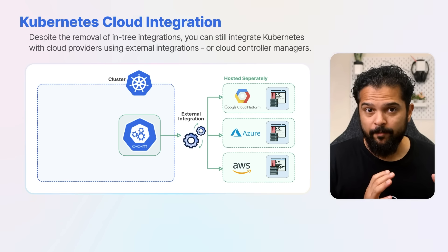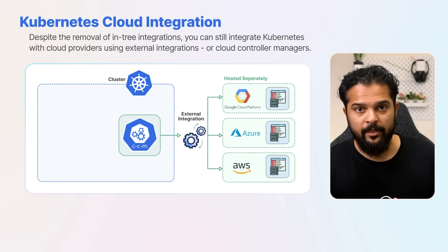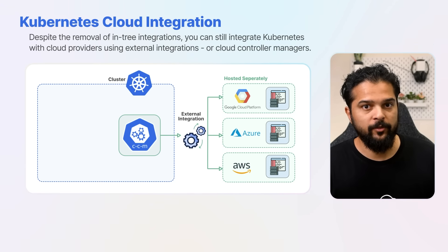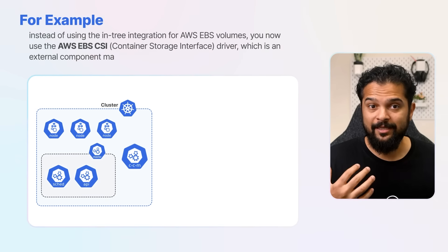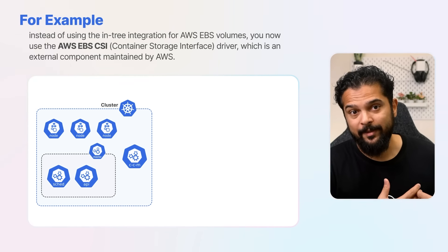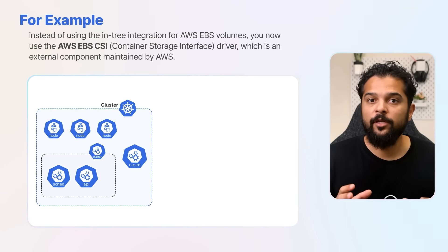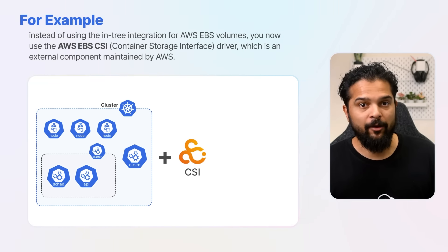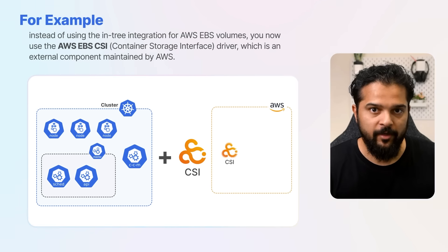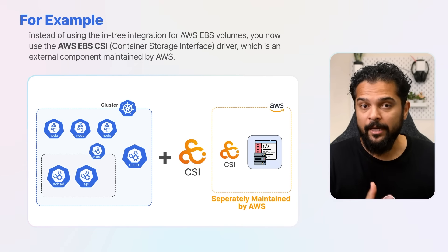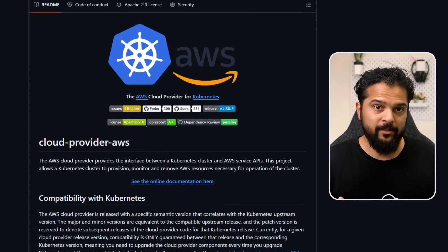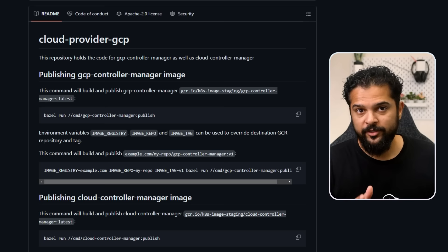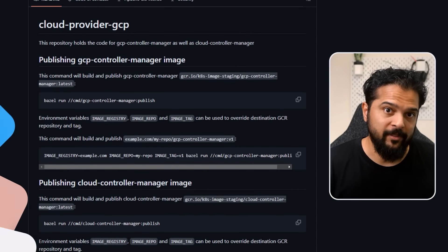These can be either part of the Kubernetes project but hosted separately, or provided by third-party developers or the cloud providers themselves. For example, instead of using the in-tree integration for AWS EBS volumes, you can use the AWS EBS CSI — Container Storage Interface — Driver, which is an external component maintained by AWS. You can check out these types of Kubernetes projects hosted separately for AWS, Azure, or GCE using the links in the comments below.